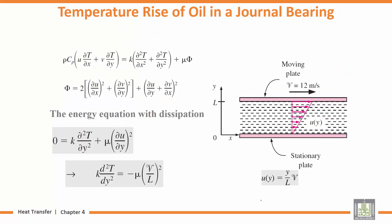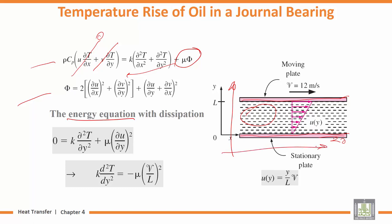Now for the temperature distribution, we use the energy equation including viscous dissipation. The oil has high viscosity, so viscous dissipation must be accounted for. Since the plates are isothermal at 20°C, temperature only varies in the y-direction, so dT/dx = 0.